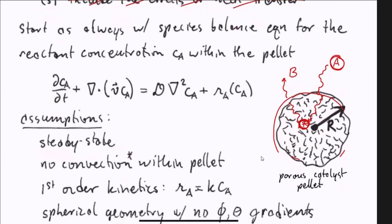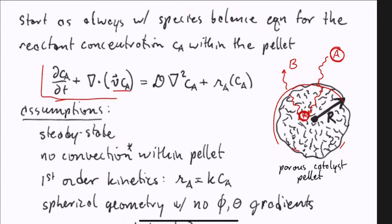We're going to start our analysis from the species balance equation. This is an accumulation term, we have a convection term, a diffusion term, and a reaction term - generation of A molecules per unit volume inside the catalyst pore network. The assumptions we're going to make are that we're at steady state, so that gets rid of our accumulation term. We're going to assume no convection within the pellet.